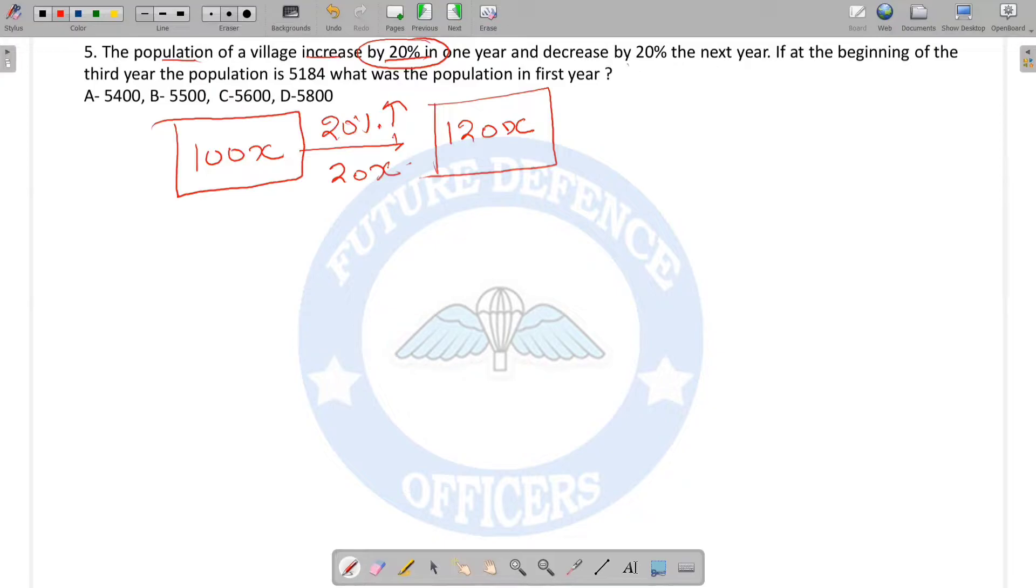Now after one year, there will be a 20% decrease. So let's decrease the population by 20%. This 20% decrement will be from 120x. How much is the decrement? 20% of 120x, which is 20 times 120 upon 100.